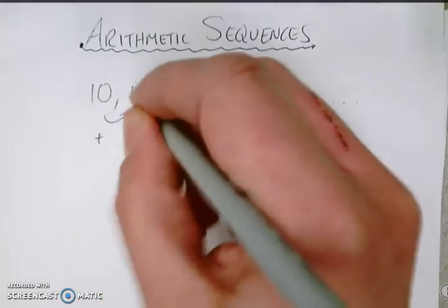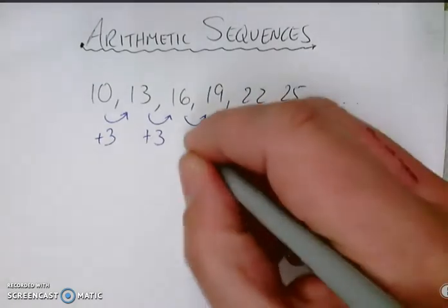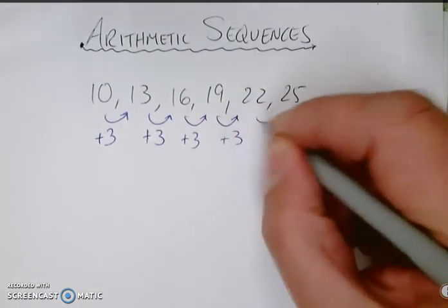So for this one, from 10 to 13, it has a change of 3. 13 to 16, change of 3. And then plus 3, plus 3, all the way down.